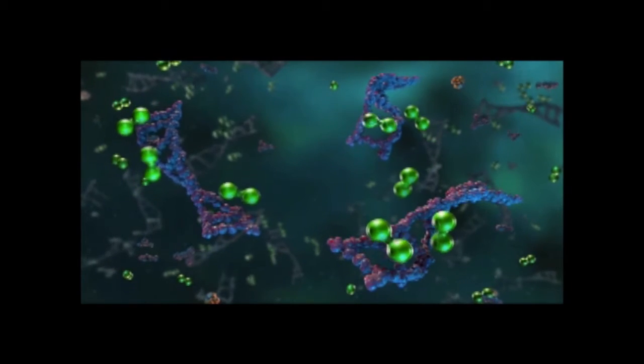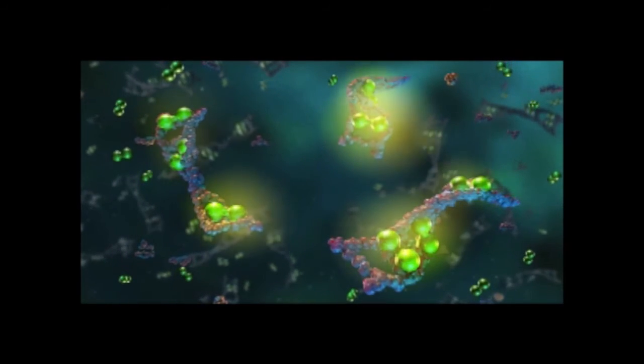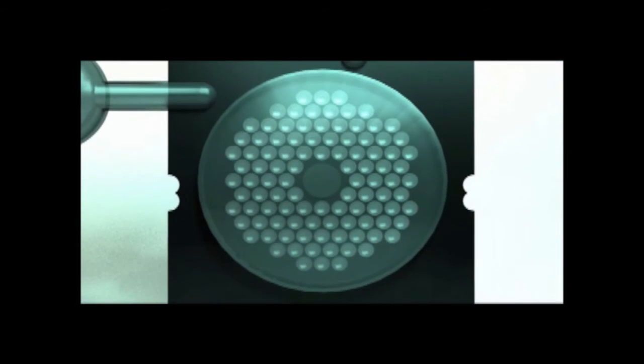A fluorescent double-stranded DNA binding dye is used to monitor each reaction. The second stage primers in each well are designed to detect one specific target. Organisms are identified based on which wells in the array are positive.